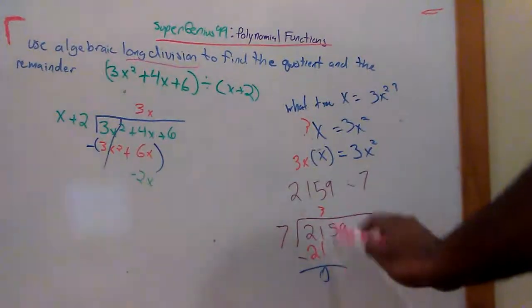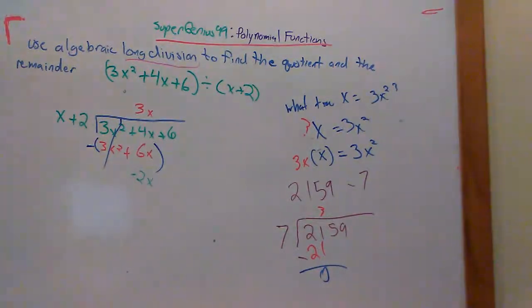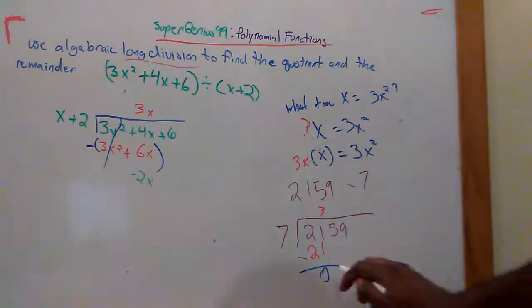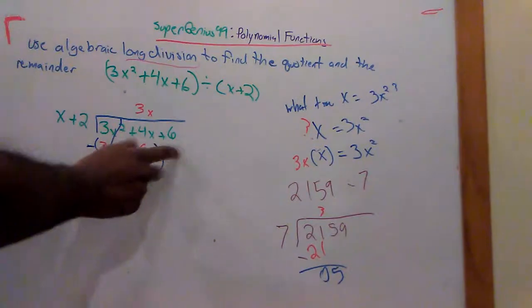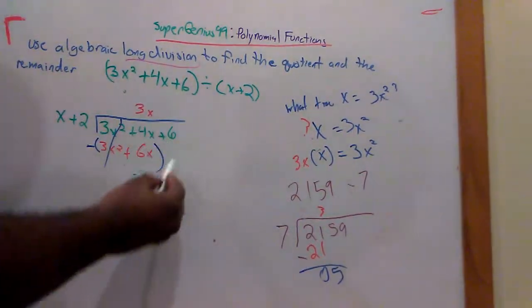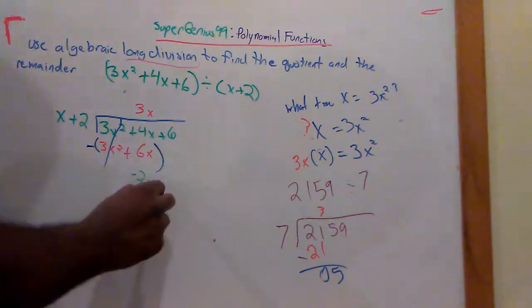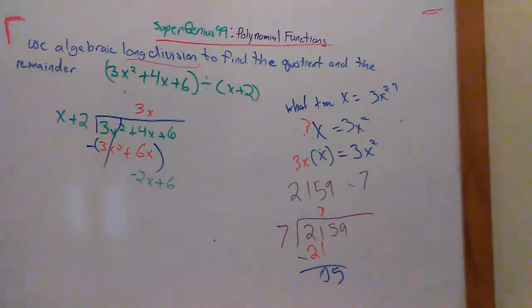And then what happened over here? When you did your regular division, what happened after you subtracted this? You brought down. You brought down the next number. You brought the 5. Guess what we're going to do in long division? We're going to do the same thing. After we're done subtracting, we're going to bring down the next number, which is coming down with its symbol here. So plus 6. See how it's the same thing? It's just using variables. You're doing the same process as regular division.